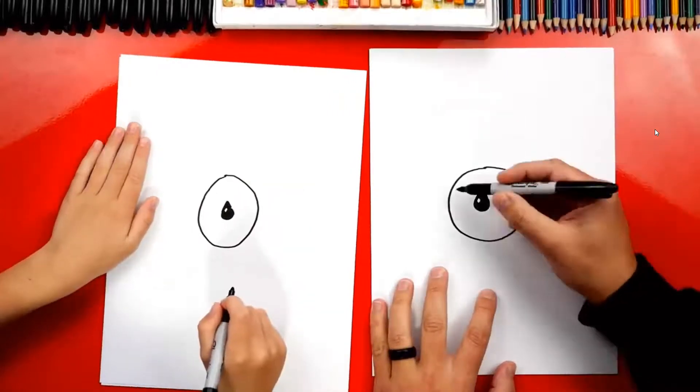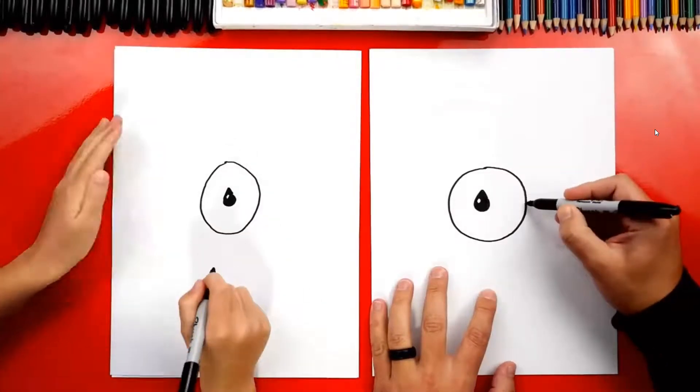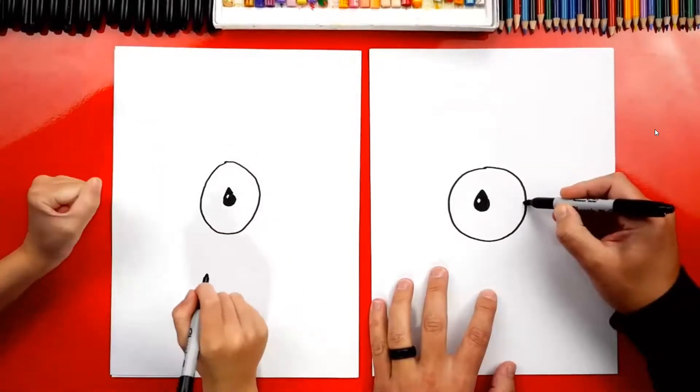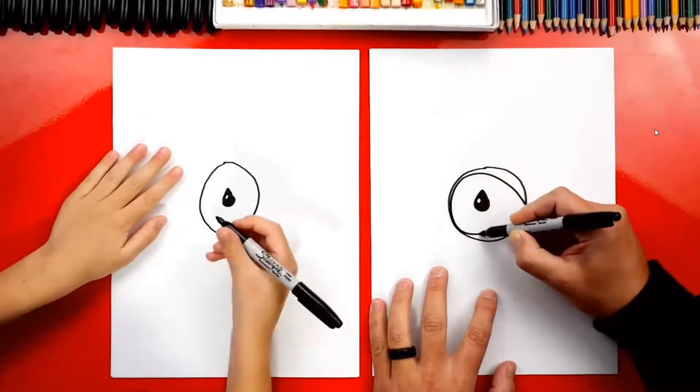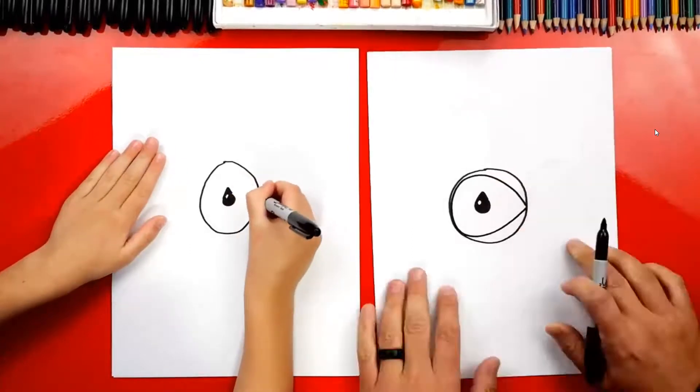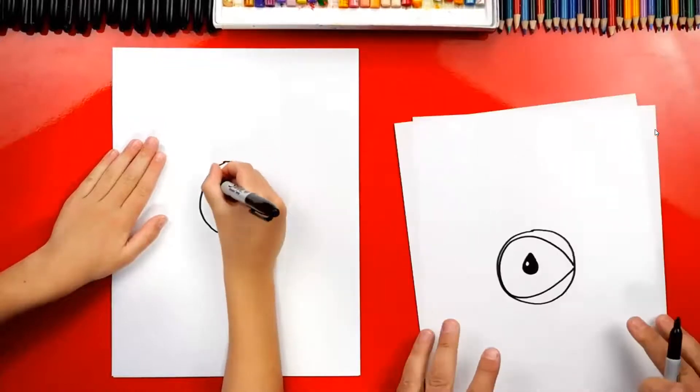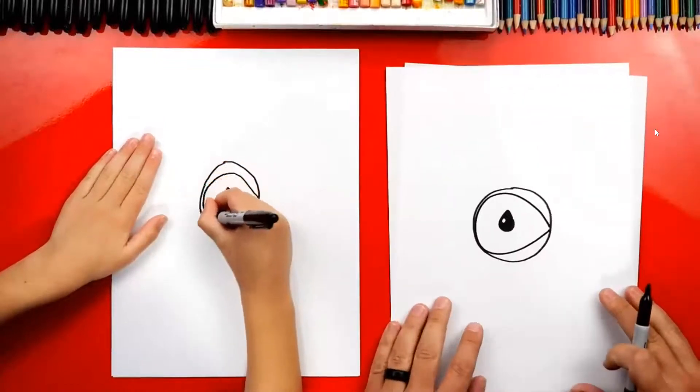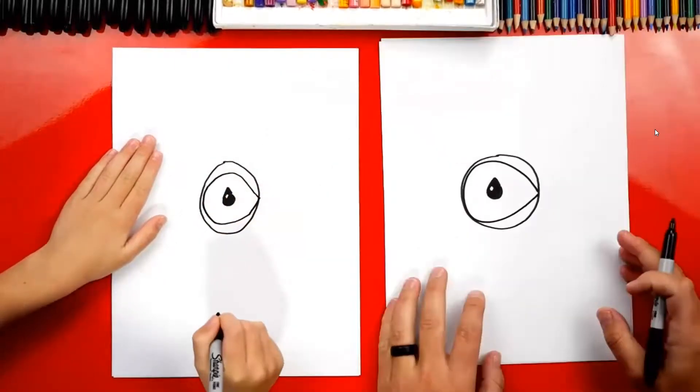Now we're going to draw a sideways raindrop inside of the head or the big circle. We'll start here on the low point and we're going to draw this big raindrop shape that goes around like this, comes back and then comes back to where we started. You can also turn your paper like this if it's a little easier. Keep going and come back to that little point. You did it. Good job.